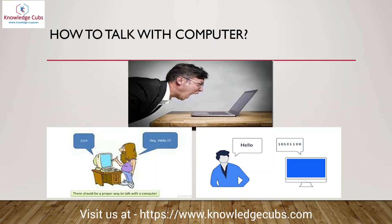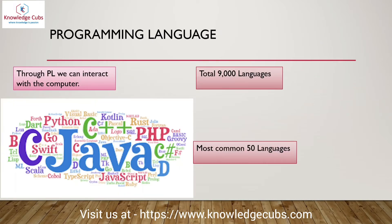How do we talk with a computer? Computers communicate in a specific way — we cannot directly talk with a computer the way we talk to each other through languages like Hindi or English. In order to talk with the computer, we need to write a program and communicate through it, because the computer only understands binary numbers — zeros and ones. If we simply say 'hello' to the computer, it does not understand anything. The solution is a programming language.